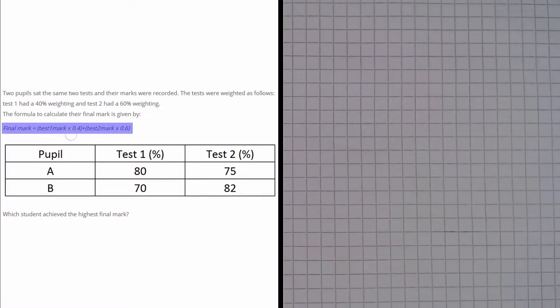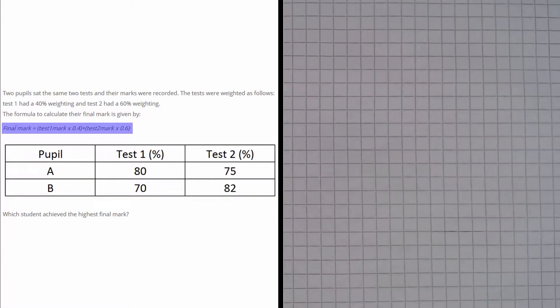The final mark is given by this formula highlighted in blue here. What we need to do is apply this formula to pupil A and pupil B and see who had the highest mark.